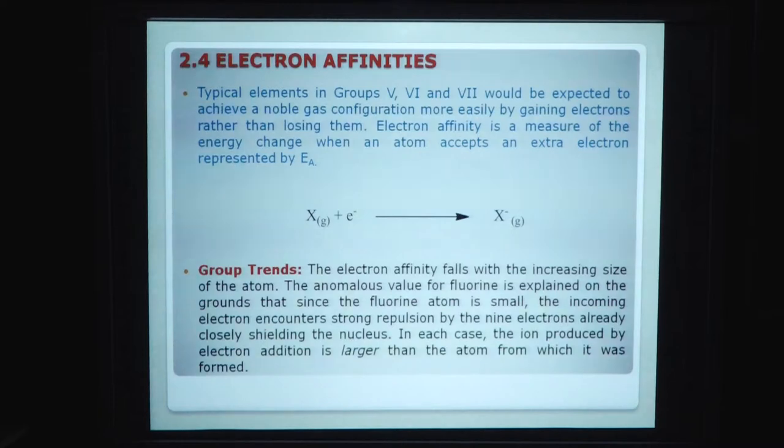Group trends. The electron affinity falls with increasing size of the atom. The anomalous value of fluoride is explained on the ground that since the fluoride atom is small, the incoming electron encounters strong repulsion by 9 electrons already closely shielding the nucleus. In each case, the ion produced by electron addition is larger than atom from which it was formed.